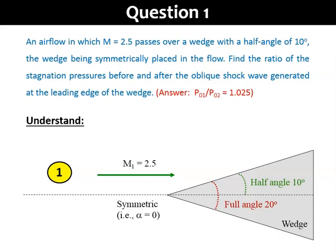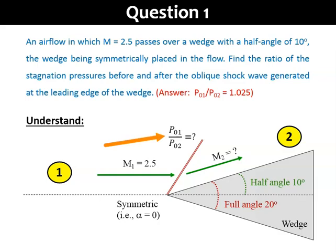Because there is an inclined surface of 10 degrees, the flow will be deflected at the same angle. But, since we have a supersonic flow, the flow can only be deflected across an oblique shock wave, as shown in the diagram. Our task is to find the ratio of P01 over P02. Since stagnation pressure reduces across a shock, that ratio should be bigger than 1.